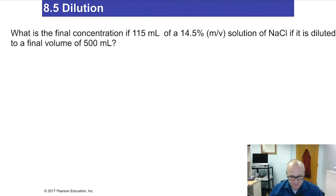So let's see a problem. What is the final concentration if 115 milliliters of a 14.5% mass over volume solution of sodium chloride, if it is diluted to a final volume of 500 milliliters? All right. So here's how I would solve this. C one equals 14.5%. Try that one more time. 14.5%. And V1 equals, or sorry, this should be Cᵢ and Vᵢ is 115 milliliters.